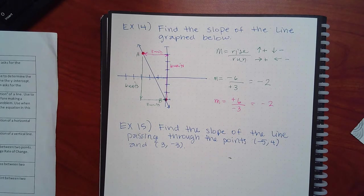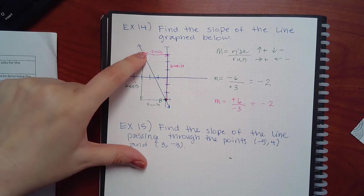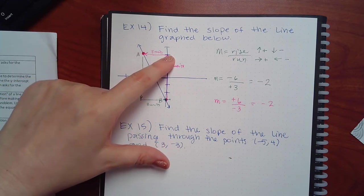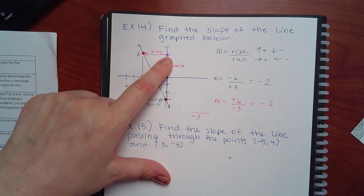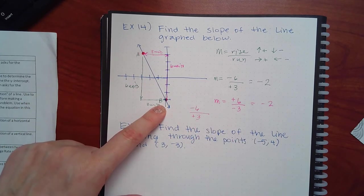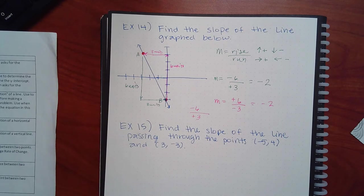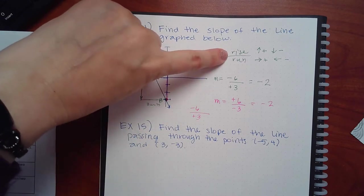You have to make sure you start with one point and get to the other — don't mix directions partway through. Remember: rise and fall go on top, run goes on the bottom. If you choose to run first that's fine, just put the run on the bottom and the rise/fall on top. You'll still get the same answer.